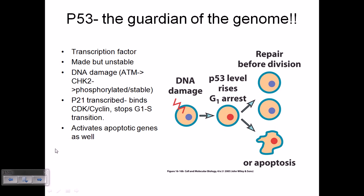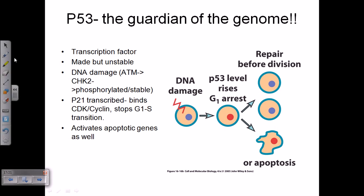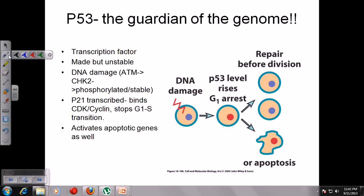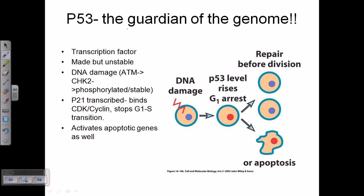An example of a tumor suppressor gene is P53 — and not just an example, this is the most important of all tumor suppressor genes. We can call it the guardian of the genome. In the normal situation, P53 actually regulates the growth and division of cells.